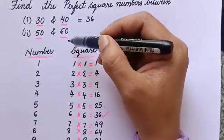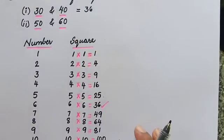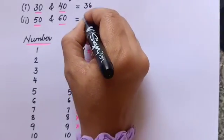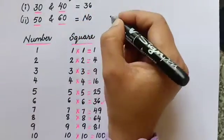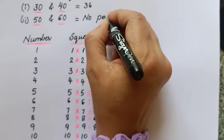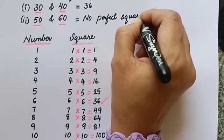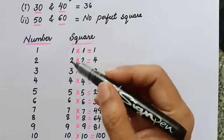How about 50 and 60? Is there any number between 50 and 60? After 49, there is no perfect square between 50 and 60. No perfect square between 50 and 60.